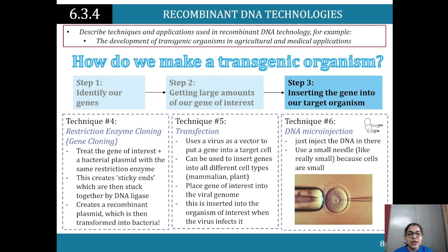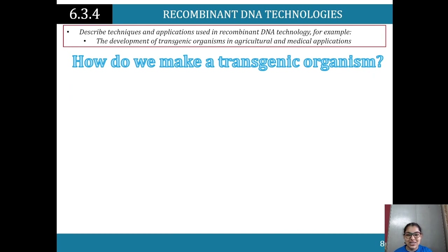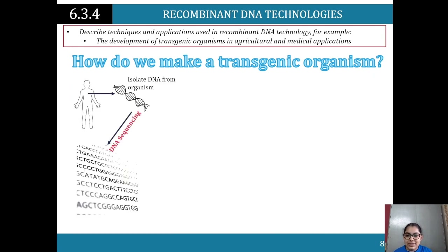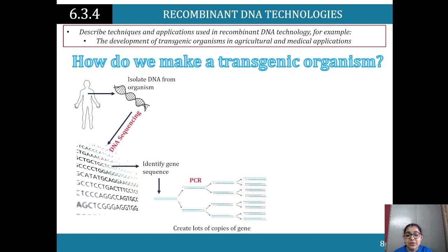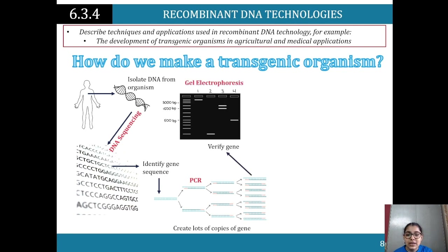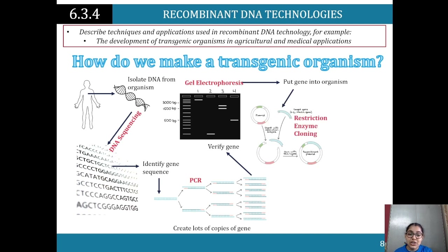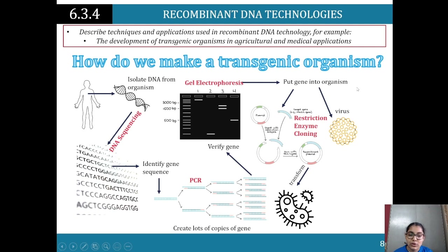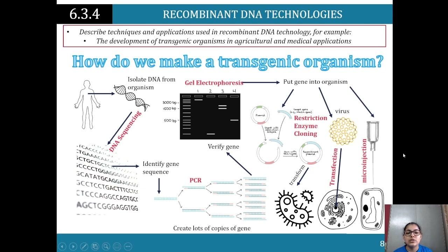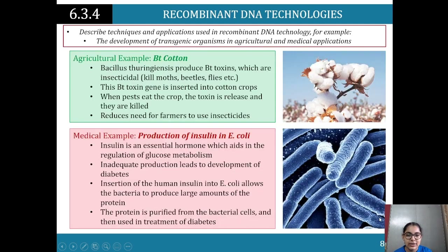Finally, DNA microinjection uses a small needle to inject DNA directly into cells. The overall workflow is: isolate the DNA, do DNA sequencing to identify genome sequences, create lots of copies of the genes, use gel electrophoresis to verify the gene, then put the gene into an organism to transform it. Either transfection or microinjection can be used - all three methods work.